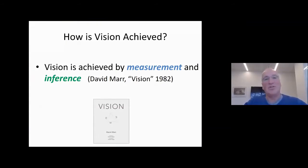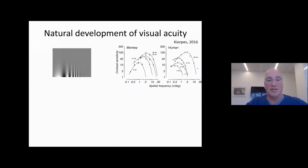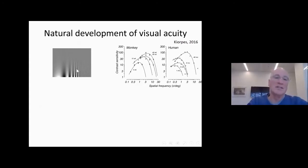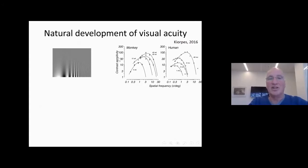How is this achieved? Vision is achieved by multiple courses of both measurement and inference. When we talk about measurement, the first thing typically doctors and people interested in low-level vision would study is spatial acuity — basically your ability to tell gratings of different spatial frequencies. Here's data from Lynn Cureps and others who measured contrast sensitivity as a function of spatial frequency in monkeys and humans.